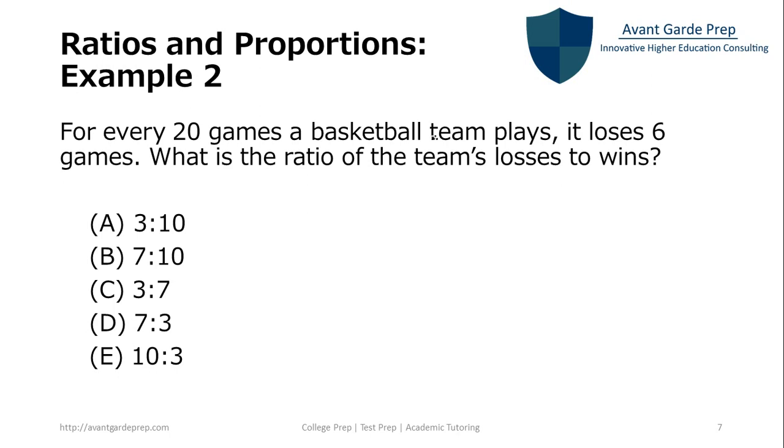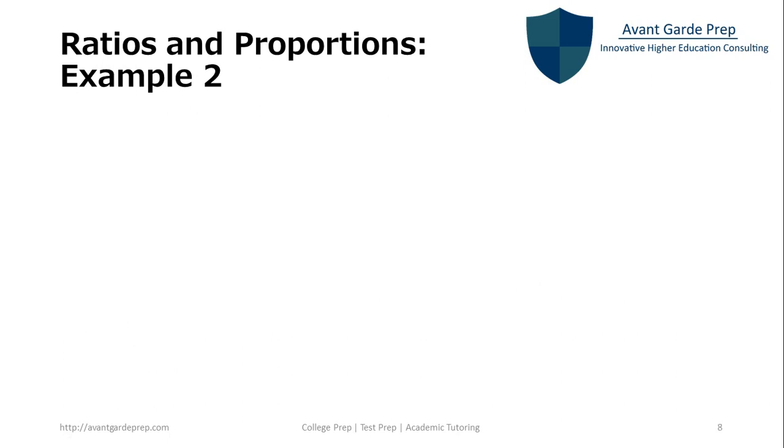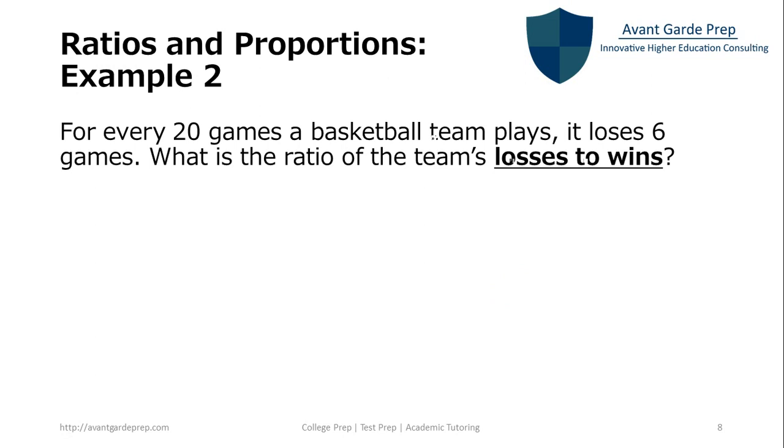This is a little tricky because it asks for a ratio of losses to wins. But only gives you losses per total games. So for every twenty games, the team loses six games. That doesn't tell you how many games they win. But we can do a little bit of math and figure that out. So the key is losses to wins. So our first is losses. So we know that every twenty games, six are lost.